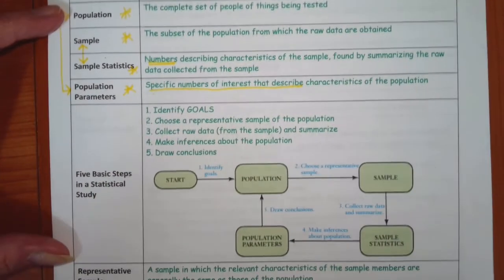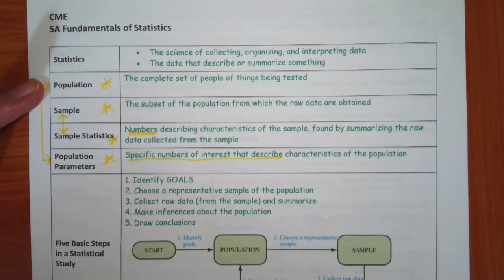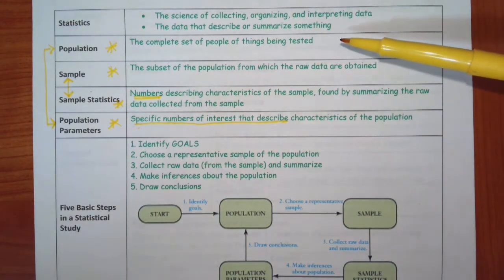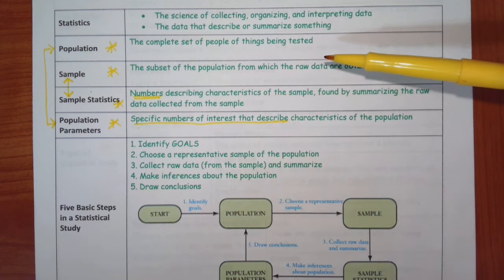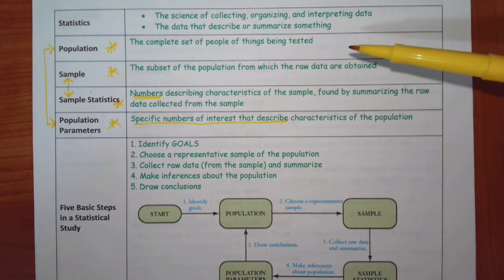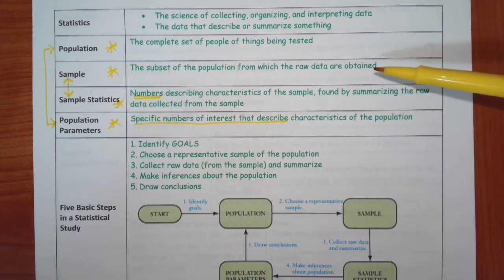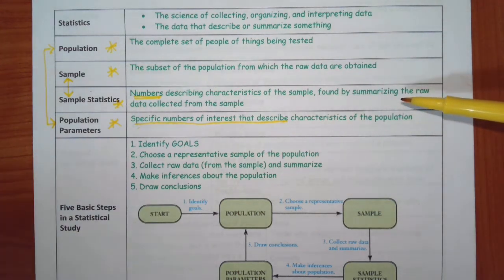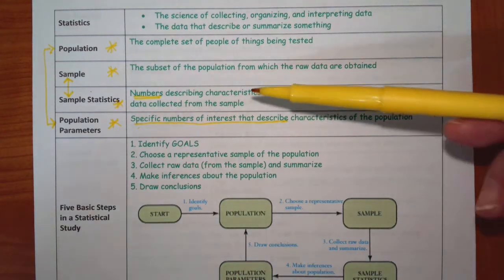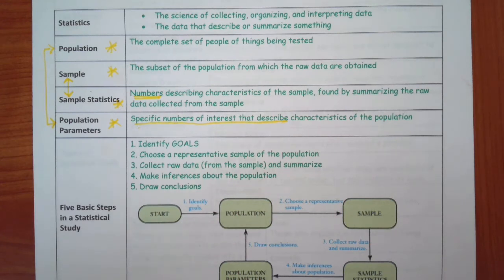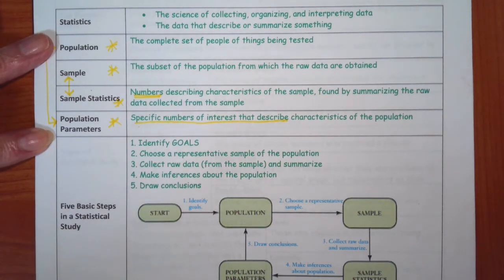So these four definitions and the five steps to a basic study kind of go hand in hand. So we start out with the population. This is a set of people or things being tested. This is the big group. This is what we want to know information about. And the chances are we cannot poll everybody or test everybody. So a sample is a subset of the population, and this is where we get the data. The sample statistic is after we have done, retrieved our data, it is the numbers describing the characteristic of the sample. And then the population parameter is when we take the sample statistic and apply it to the population.